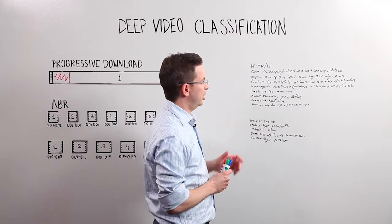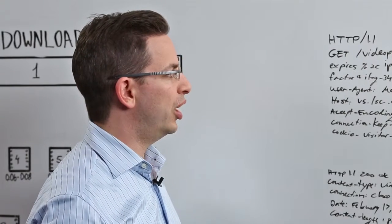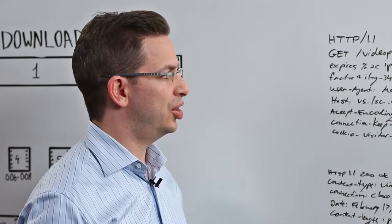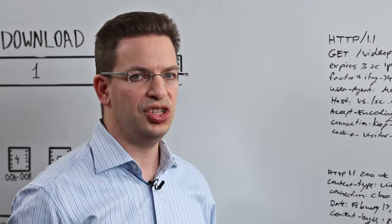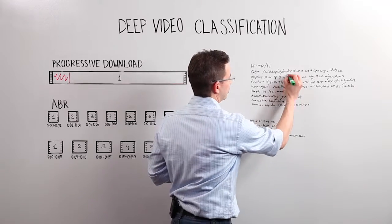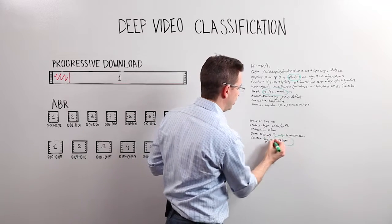What we see here is an example of two HTTP messages that belong to a video file. What our deep video classification technology does is we look at specific characteristics inside that HTTP packet. For instance, this field here and that field there and this field there.